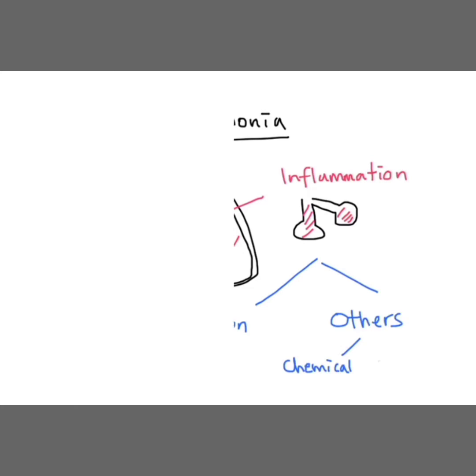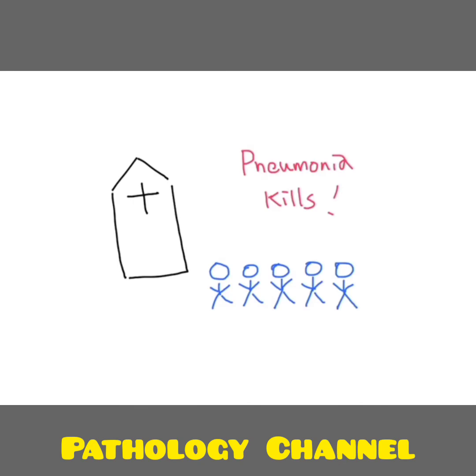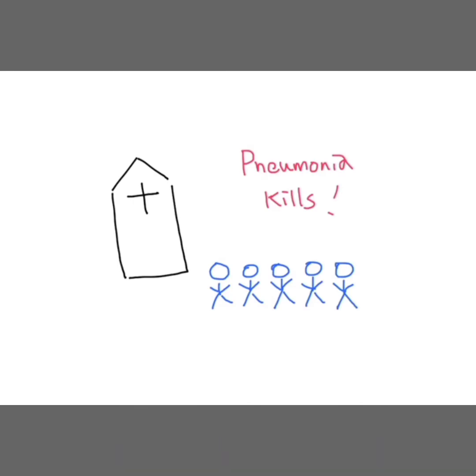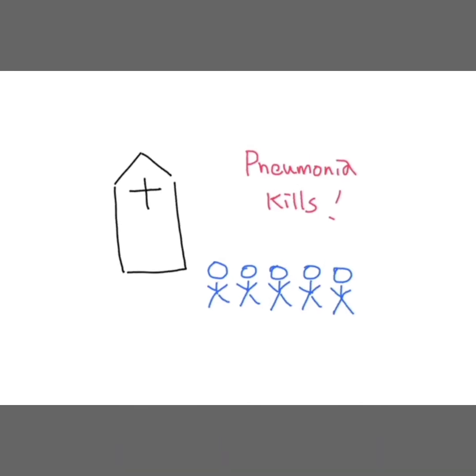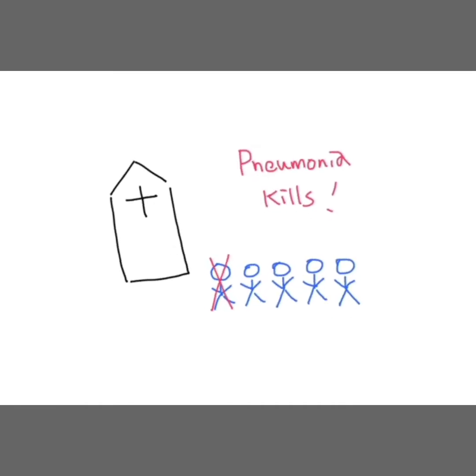We want to know about pneumonia because it kills. Out of all the patients who have pneumococcal pneumonia with bacteremia, the mortality rate is 1 in 5. The older the patient, the higher the mortality rate.